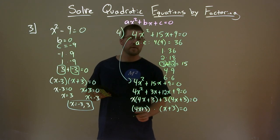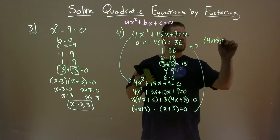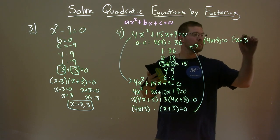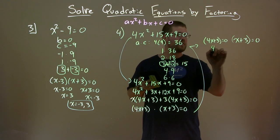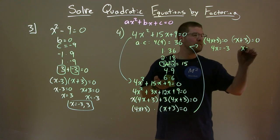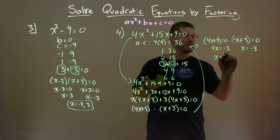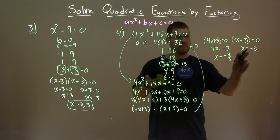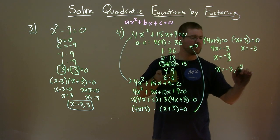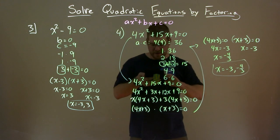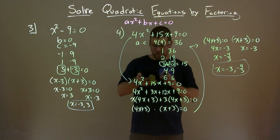Now we set each part equal to zero: 4x plus 3 equals zero, and x plus 3 equals zero. Subtracting 3 gives 4x equals negative 3, and x equals negative 3. Dividing both sides by 4 gives x equals negative 4 thirds. So our two solutions are x equals negative 3 and negative 4 thirds. We've solved this quadratic equation by factoring using grouping.